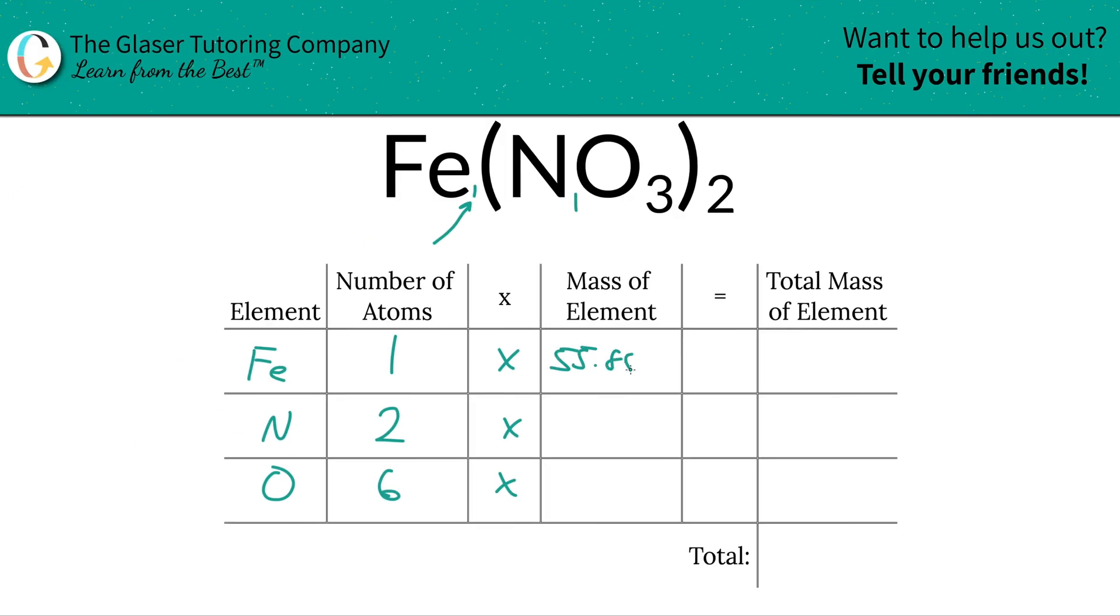nitrogen is going to be 14.01, and oxygen is 16. Then we're going to find the total mass of each element in the compound, and all we have to simply do is just multiply the row across, right?